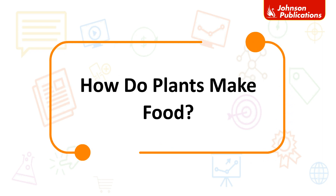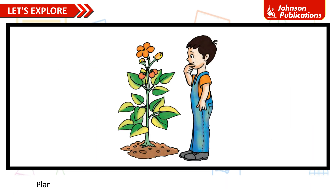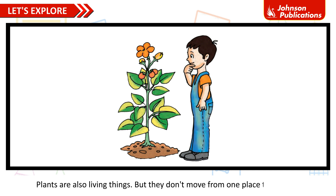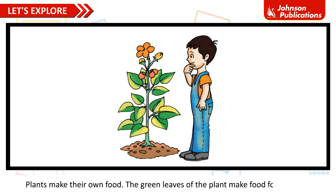How do plants make food? Let us explore. Plants are also living things, but they don't move from one place to another. Plants make their own food. The green leaves of the plant make food for the plant.